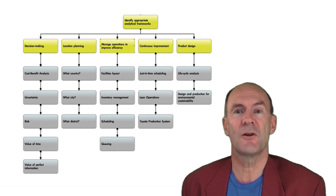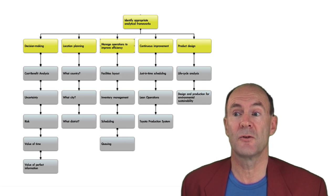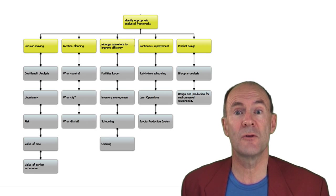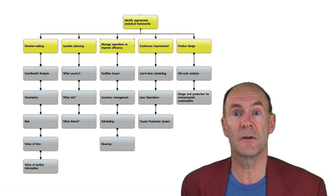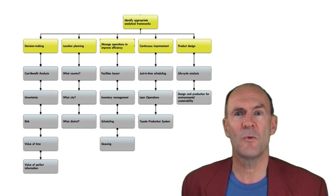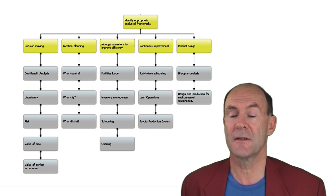When it comes to managing operations more efficiently, first, we've got to lay out facilities in new ways. We need to plan our inventory. When do we order new stock? How much stock do we hold to take account of fluctuations in demand or fluctuations in supply time? How do we schedule our production? And finally, how do we deal with uncertain arrivals of raw materials or people at our service facilities? This is the issue of queuing.